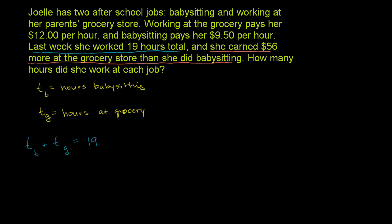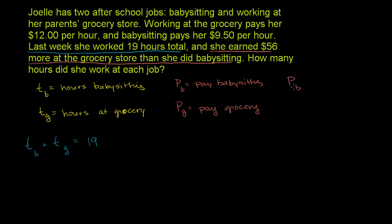Let's define p_b as the total pay babysitting, and p_g as the pay at the grocery store. The second statement tells us that the pay babysitting plus $56 equals the pay at the grocery store — she earned $56 more at the grocery than babysitting.